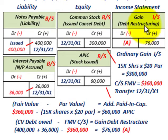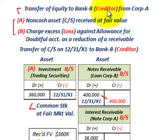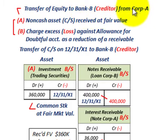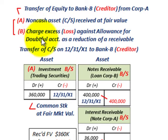We've taken care of the debtor, Corporation A. Now let's look at how the creditor, Bank B, would record the write-off of this loan. We're transferring equity to Bank B from Corporation A. Two things will happen: Bank B receives a non-cash asset — the common stock — recorded at its fair value; and there will also be a charge against an allowance for doubtful accounts as a reduction of the receivable.